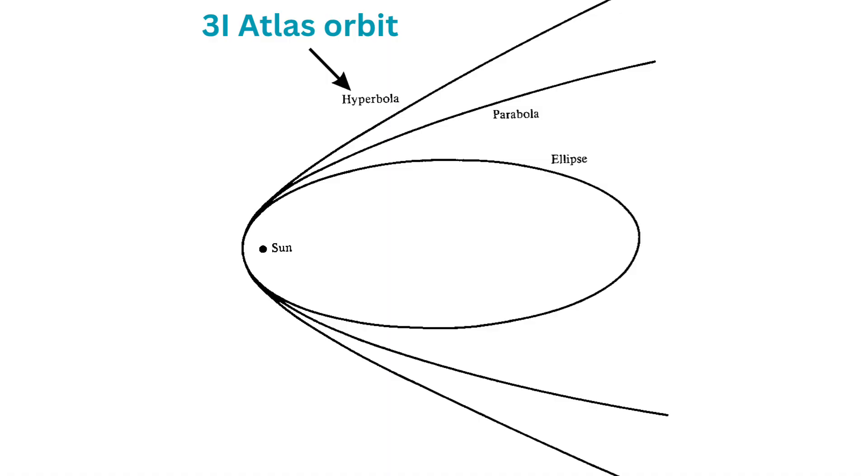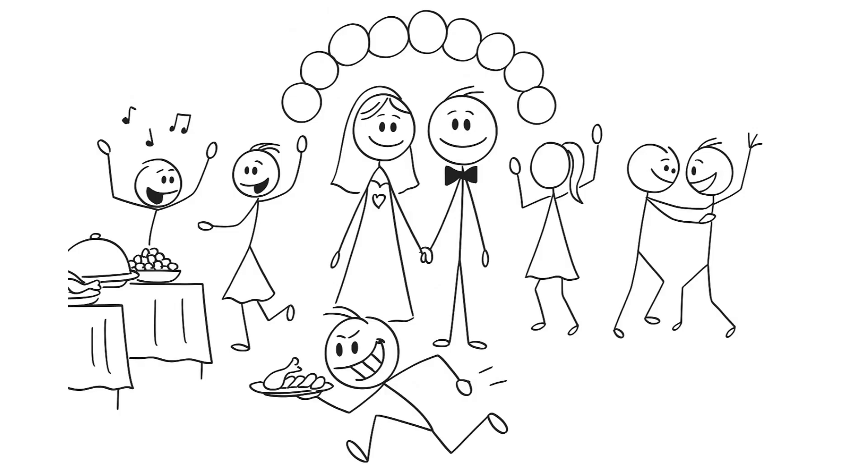Second, its orbit is hyperbolic with eccentricity greater than one. Which means it'll swing by once and never come back. It's like that one person who shows up uninvited at weddings, eats your food and disappears forever.